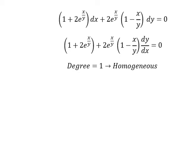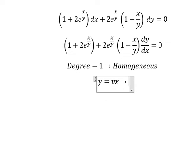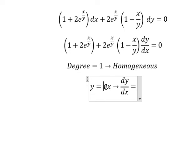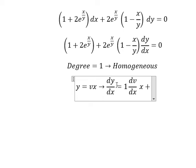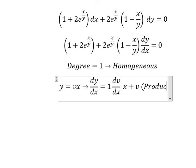I will put y equals to vx. Then we differentiate both sides and we have dy over dx. The derivative of v we have number one, dv over dx, multiplied by x. The derivative of x we have number one, so we have v. That is about the product rule of the derivative.